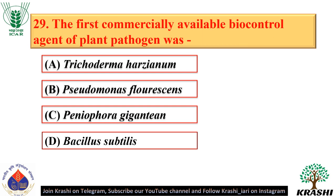Question number 29. The first commercially available biocontrol agent of plant pathogens was Peniophora gigantea — option C. It is used as a biocontrol agent of Armillaria root rot.